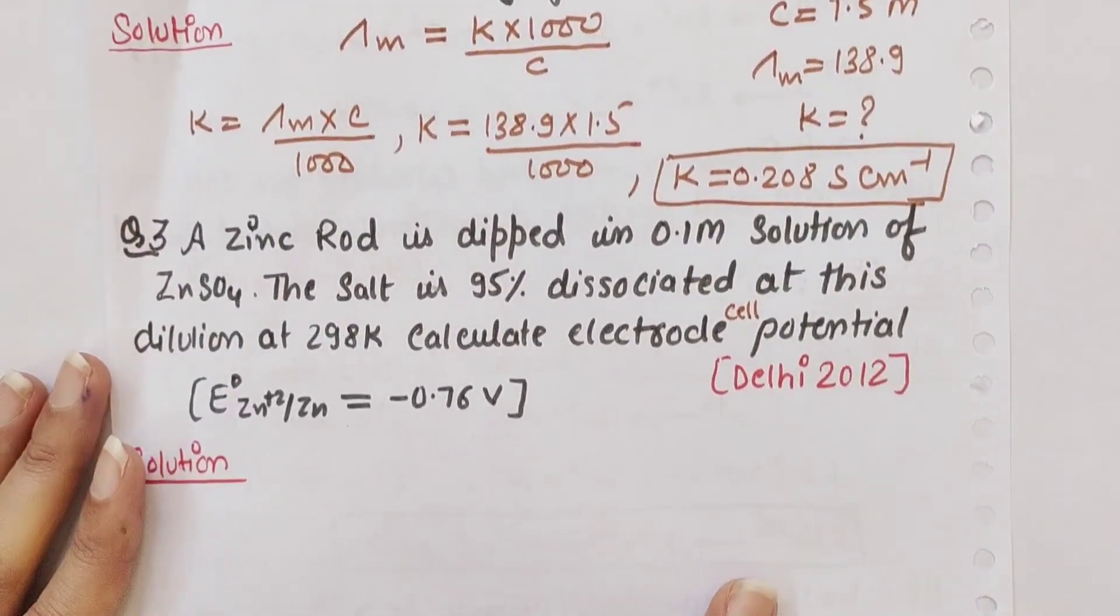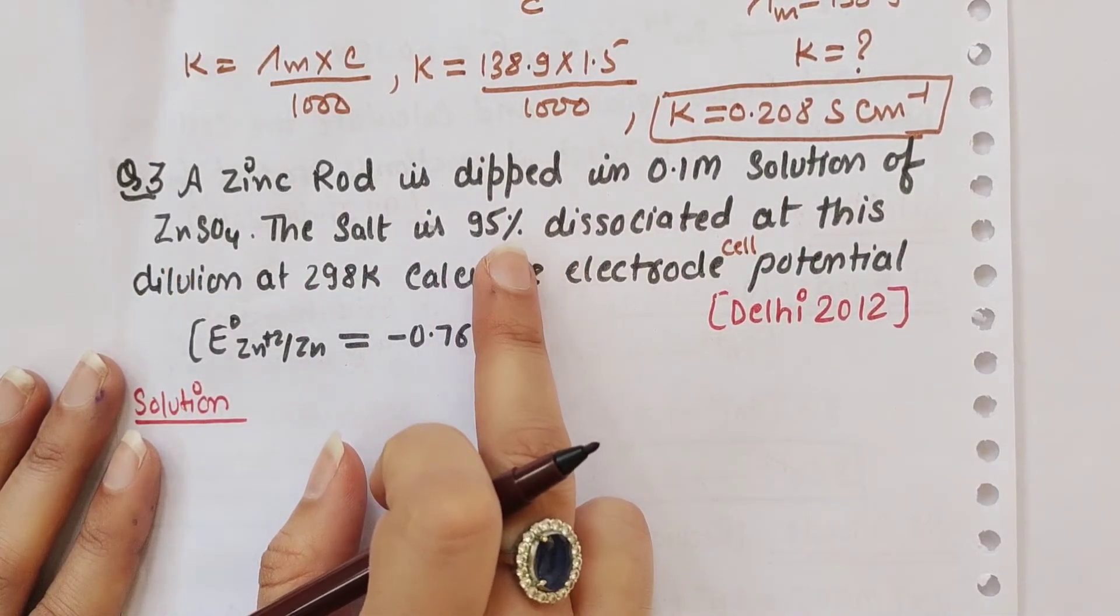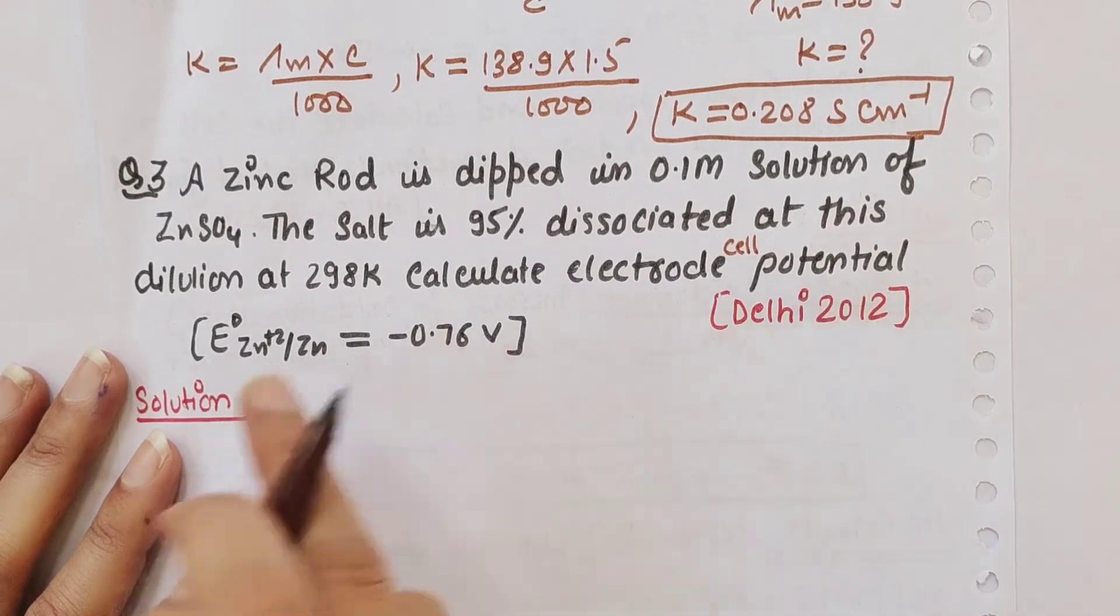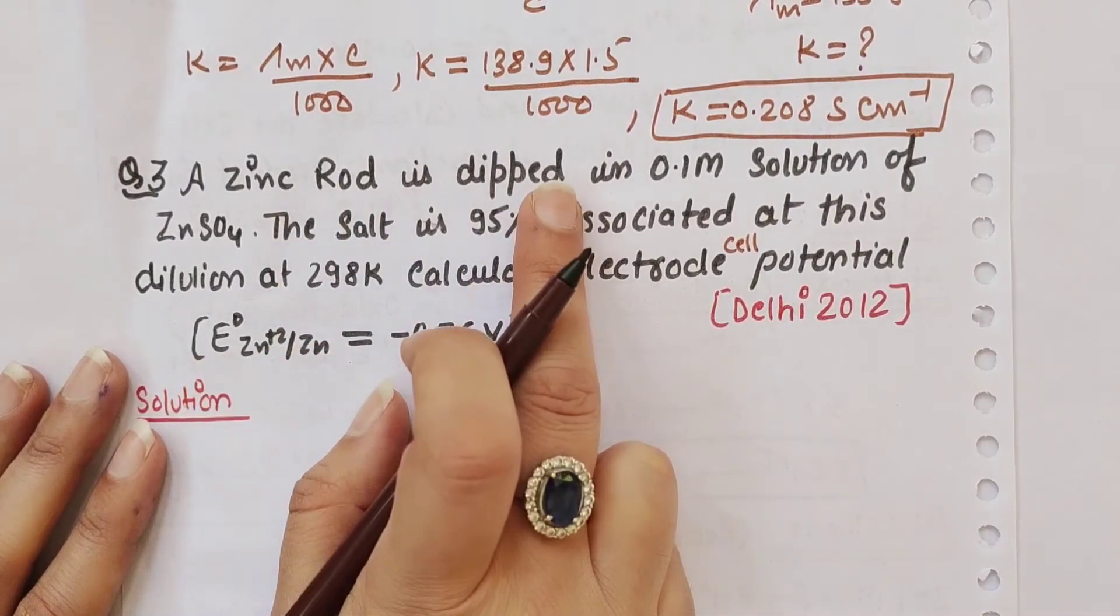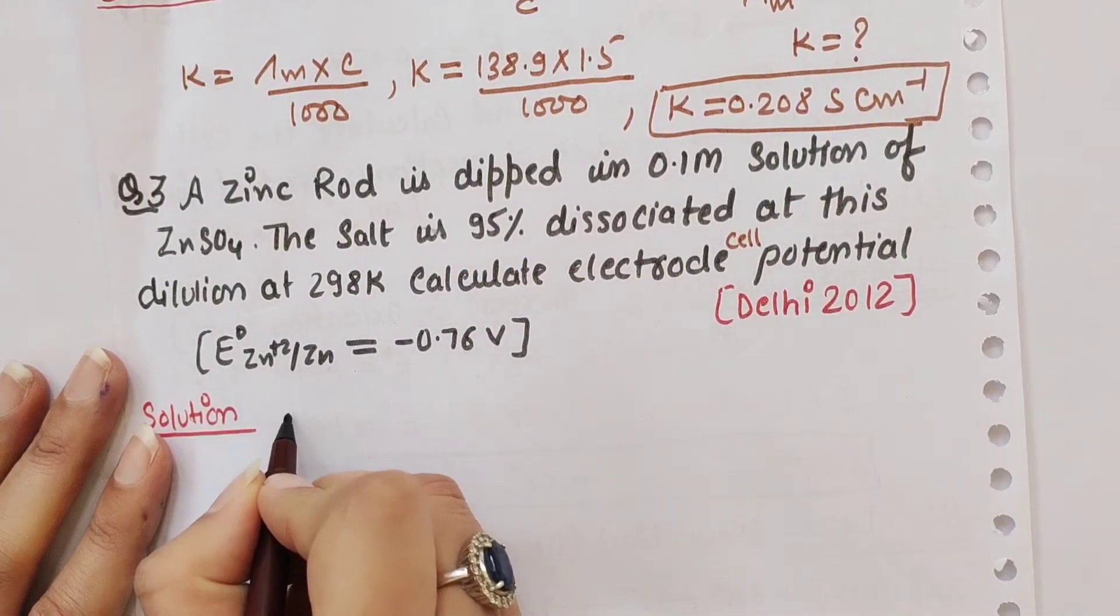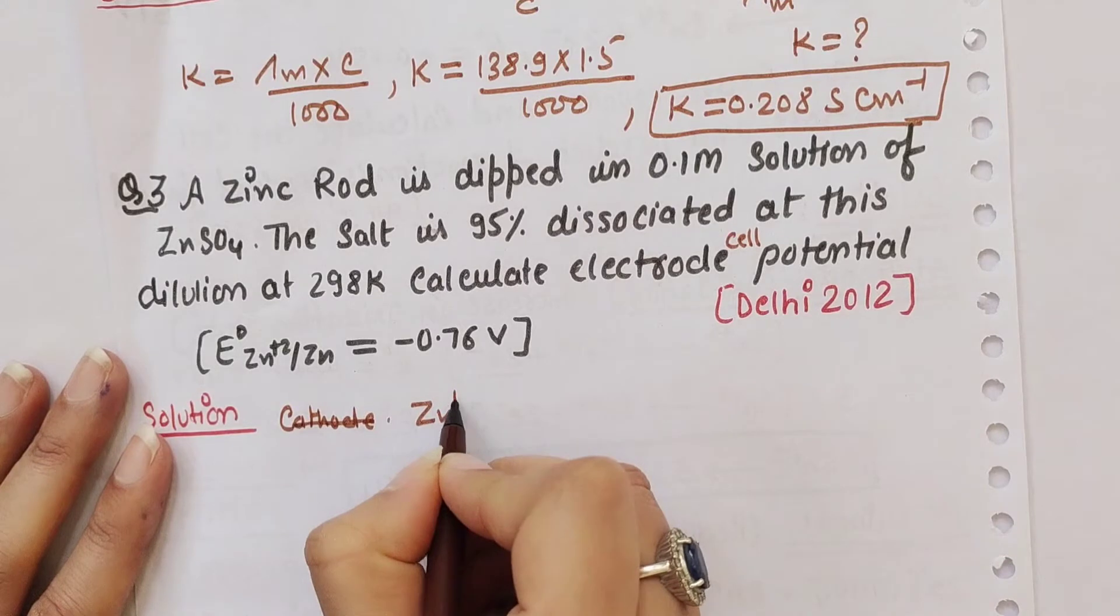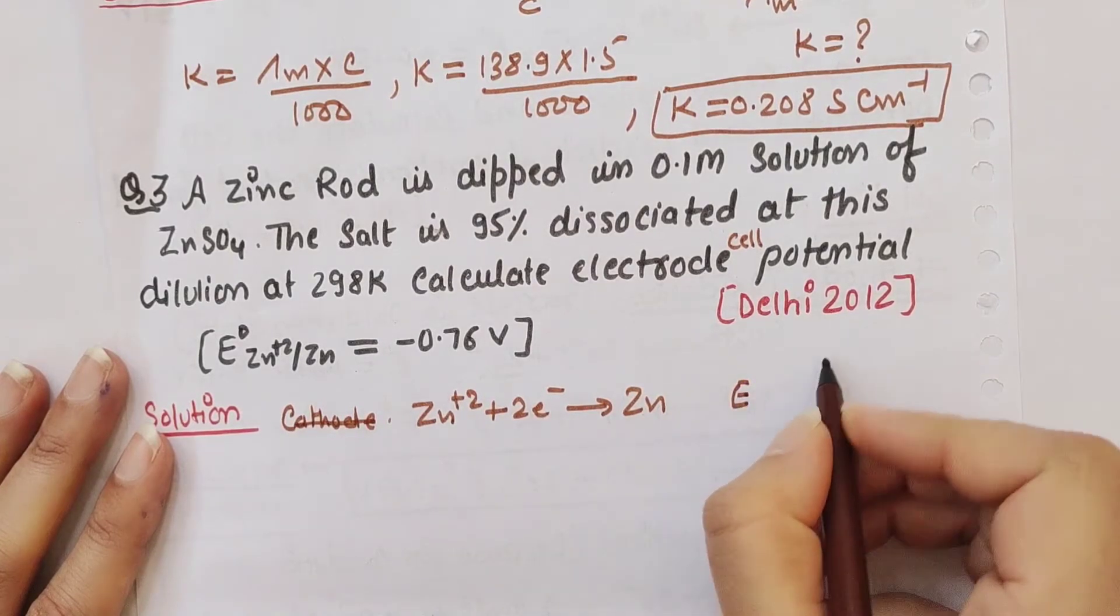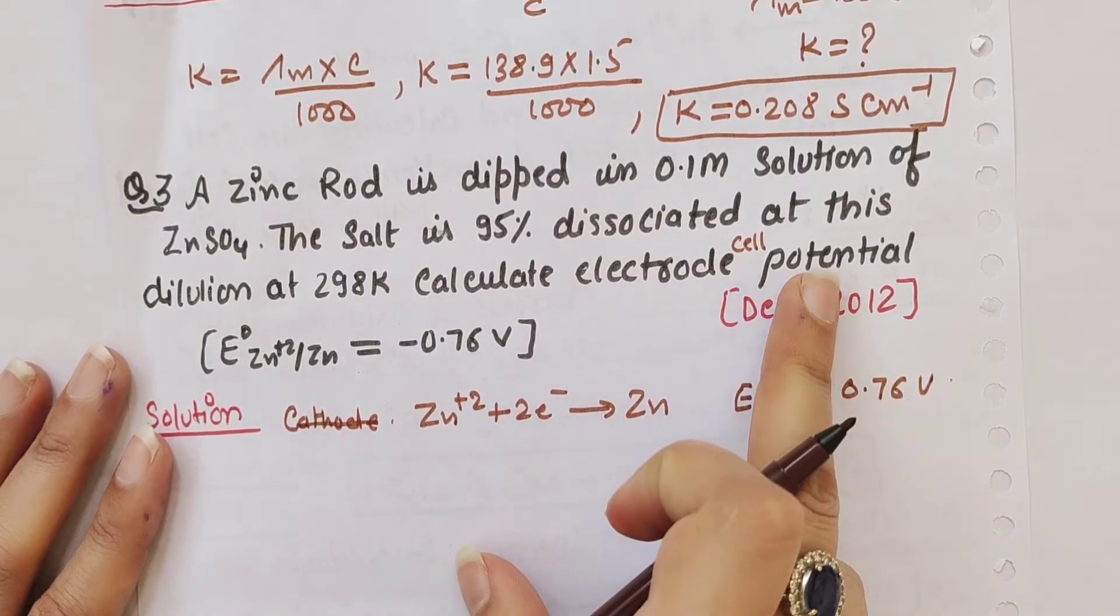Next question: A zinc rod is dipped in 0.1 molar solution of ZnSO₄. The salt is 95% dissociated at this dilution at 298 Kelvin. Calculate the electrode potential. The standard reduction potential for zinc is given as -0.76 volts. At the cathode, the reaction is Zn²⁺ + 2e⁻ → Zn.